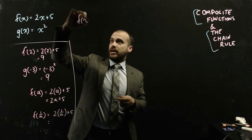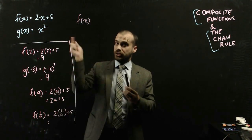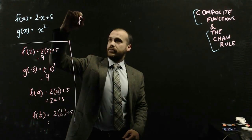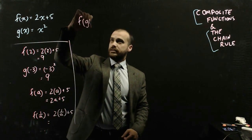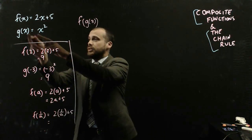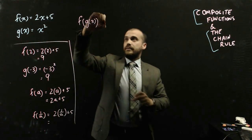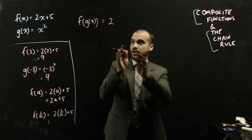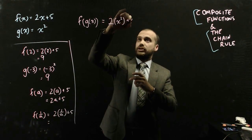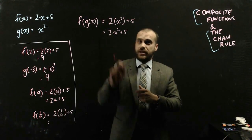So f of x is f of x. If I want to shove another function into f of x, in the bracket I'm going to put the whole function g of x. That just means inside the function, shove the g of x function in where x was. So f of x is 2x plus 5, and if I shove x squared in where the x used to be, I get this new function — that's f of g of x.